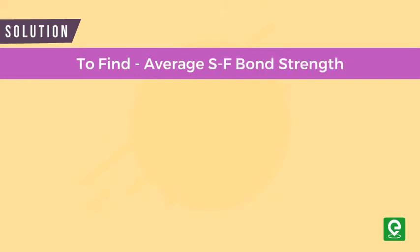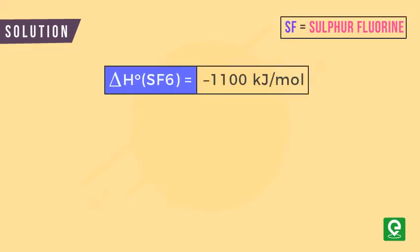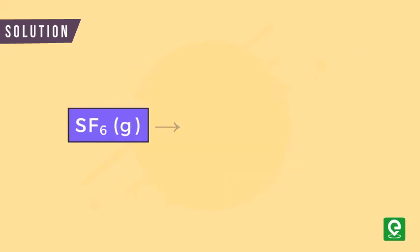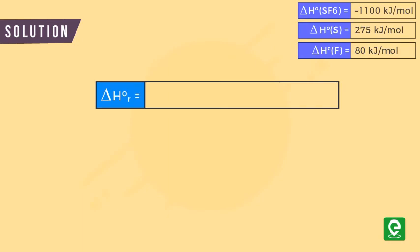We are given the enthalpies of formation of SF6, sulfur, and fluorine gases. For the reaction SF6 gives sulfur and fluorine, enthalpy of the reaction is equal to enthalpy of formation of products minus reactants.